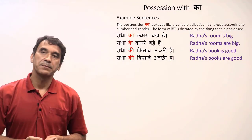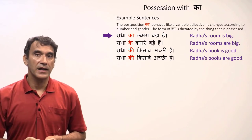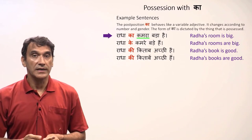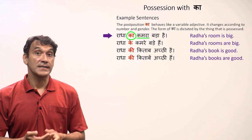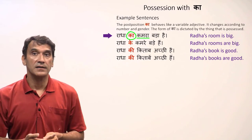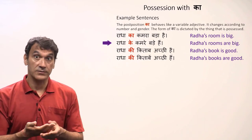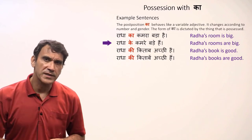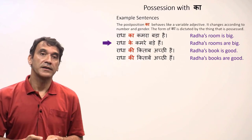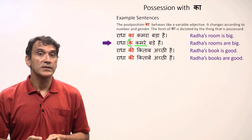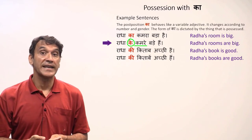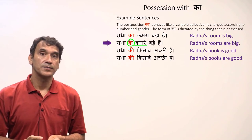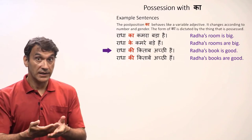Let's take some example sentences. Radha ka kamra bada hai — Radha's room is big. 'Kamra' is masculine singular, so it is 'ka': radha ka kamra. Radha ke kamre bade hai — Radha's rooms are big. 'Kamre' (rooms) is masculine plural, so the post position 'ke' is used: radha ke kamre.